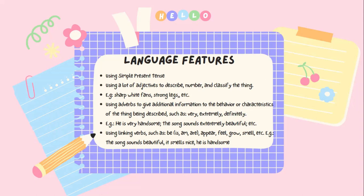Jadi ini menggunakan kata keterangan untuk memberikan informasi pada karakteristik atau ciri-ciri pada benda yang akan kita deskripsikan. Contohnya: very (sangat), extremely, definitely, dan lain sebagainya. For example: 'He is very handsome' — dia sangat tampan. 'The song sounds extremely beautiful' — lagu itu terdengar sangat indah.